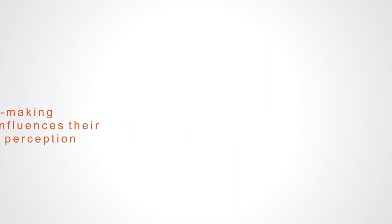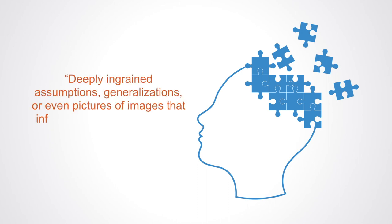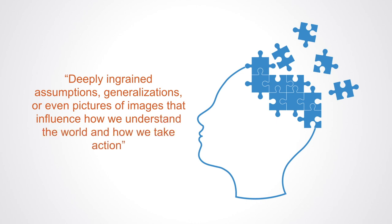Mental models reflect the beliefs, values, and assumptions that we hold, and they underlie our reasons for doing things the way we do. As Peter Senge's book, The Fifth Discipline, notes, mental models are deeply ingrained assumptions, generalizations, or even pictures of images that influence how we understand the world and how we take action.